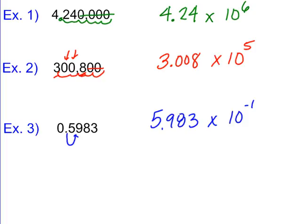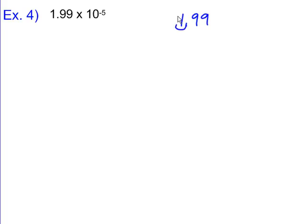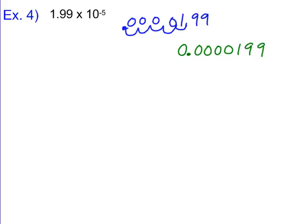Now let's go from scientific notation back to standard notation. Here I have 1.99×10⁻⁵. Because the exponent is negative 5, this is a small number, so we move the decimal to the left five places. Moving one place is fine, then we add zeros to keep going: 1, 2, 3, 4 more zeros. Rewriting, we put a zero in front of the decimal to show it's intentional, then fill in our digits.